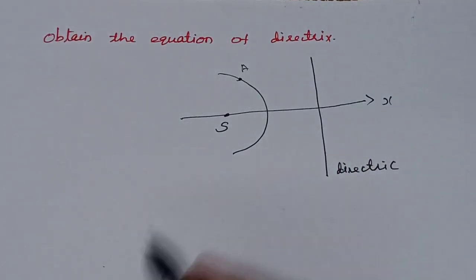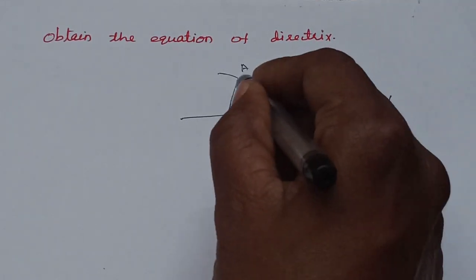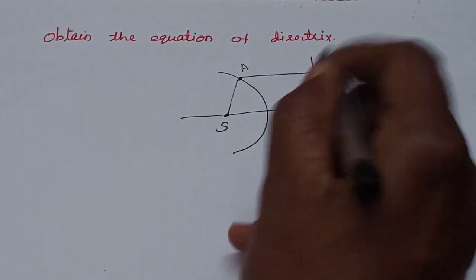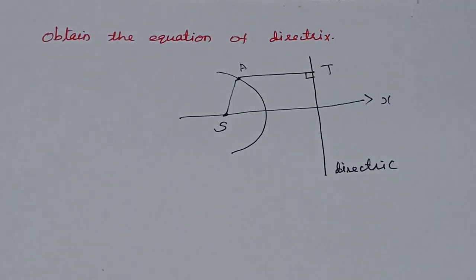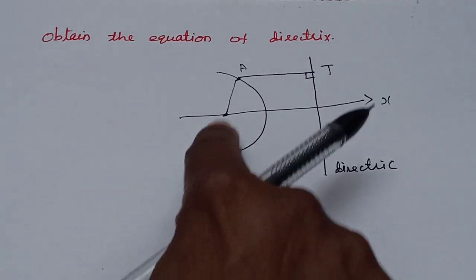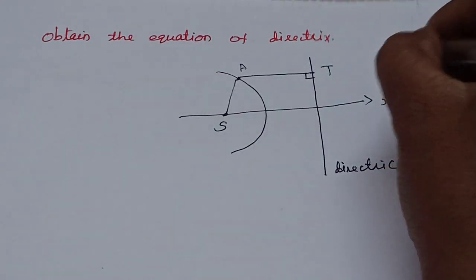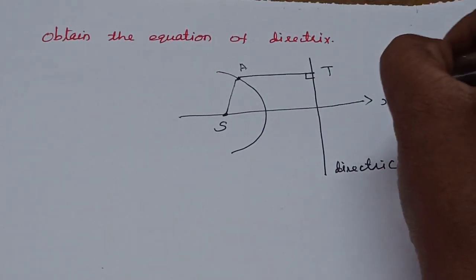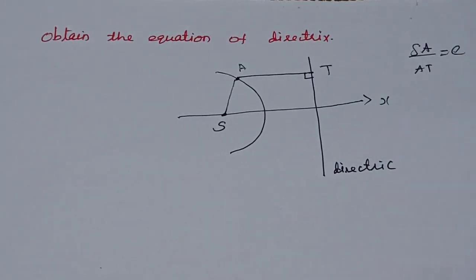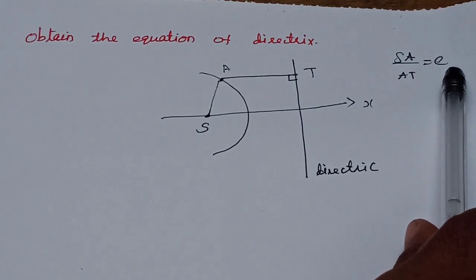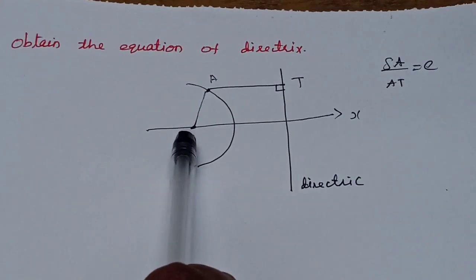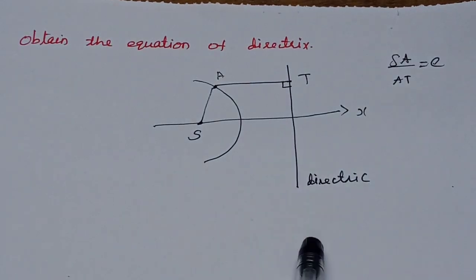The distance from the moving point to the focus equals e times the distance. If you write the foot of the perpendicular T, then SA divided by AT is equal to the eccentricity e. If e equals 1, that is a parabola. Less than 1, that is an ellipse. Greater than 1, that is a hyperbola. The fixed point is the focus and the fixed line is the directrix.